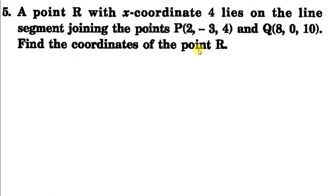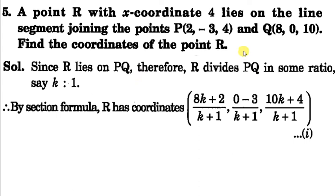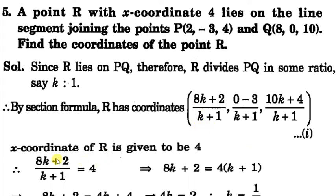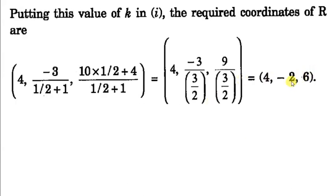Last question: a point R with x-coordinate 4 lies on the line segment joining points P and Q. Find the coordinates of R. Let R divide PQ in k:1. By section formula: x = (8k + 2)/(k+1), y = (0×k - 3)/(k+1). Setting x equal to 4: (8k+2)/(k+1) = 4, solving gives k = 1/2. Substituting back gives y = -2 and z = 6. So the coordinates of R are (4, -2, 6). That's all for today, thank you.